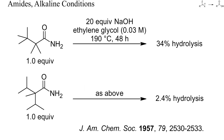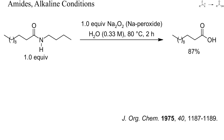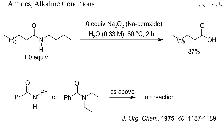Here are two more examples to show how resistant amides can be toward nucleophiles. Heating these two non-enolisable, sterically demanding amides with 20 equivalents of sodium hydroxide to 190 degrees Celsius for two days gave only low yields of the corresponding acids. More nucleophilic than hydroxide is deprotonated hydrogen peroxide. Here, a lipophilic amide was cleaved in high yield by heating to 80 degrees Celsius with just one equivalent of sodium peroxide in water.